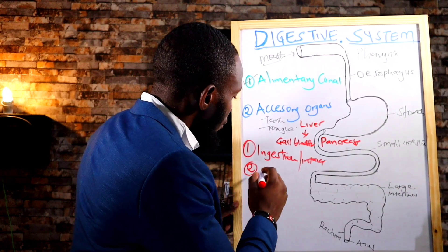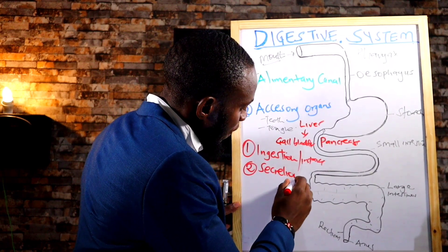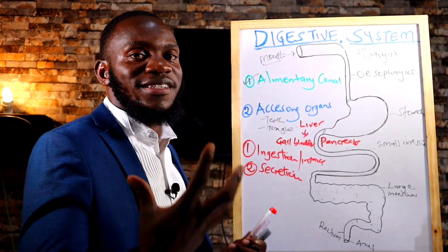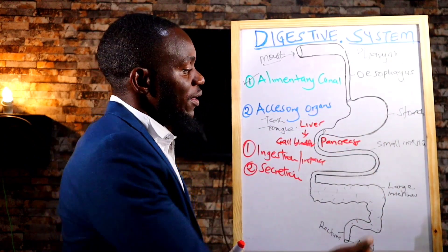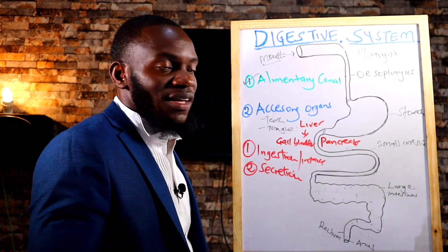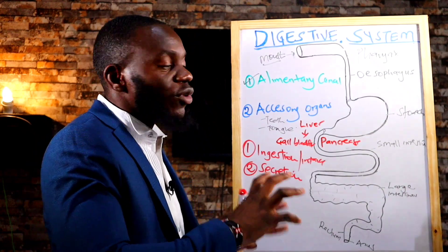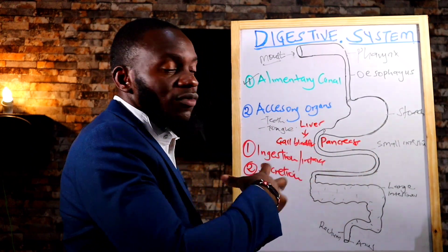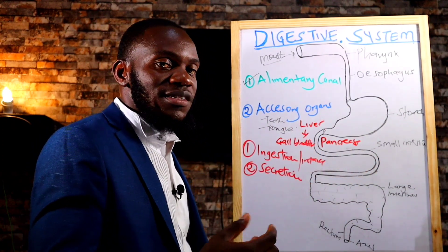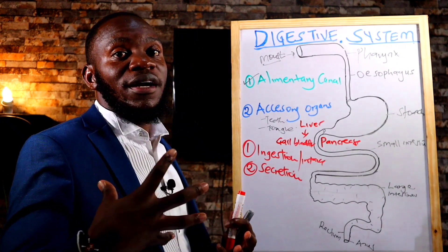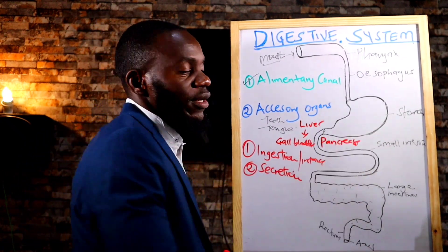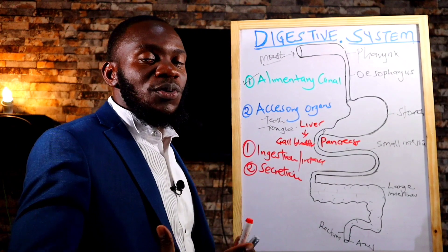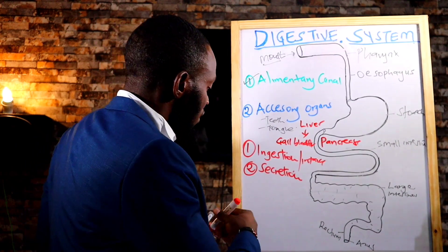Number two, we have secretion. Secretion is basically the production of juices and enzymes that will aid in breakdown of food. For example, the pancreas will give you enzymes like lipase and insulin, involved in digestion and control of blood sugar. Secretion is through these glands and ducts that give you enzymes and sometimes the acid in the stomach that helps in digestion of protein.